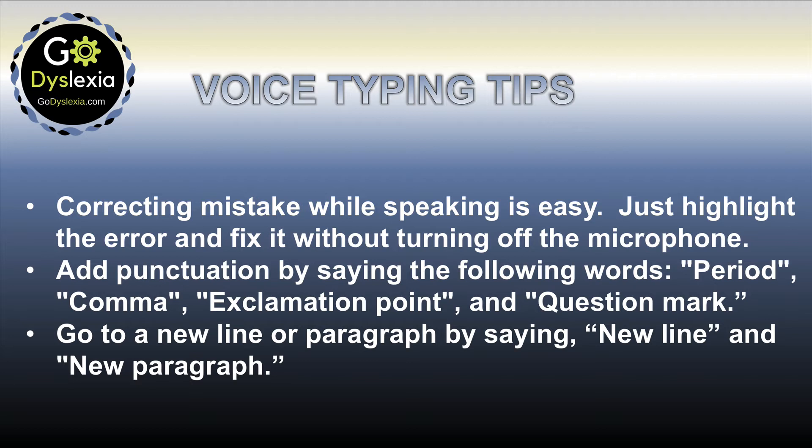Here are some tips for voice typing. First, to correct mistakes while speaking, highlight the error and fix it without turning off the microphone. In addition, you can add punctuation by saying the following words: period, comma, exclamation point, and question mark. Also, if you want to go to a new line or a paragraph, all you have to say is 'new line' and 'new paragraph.'